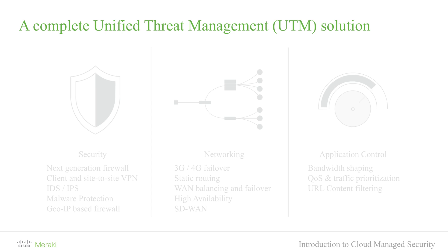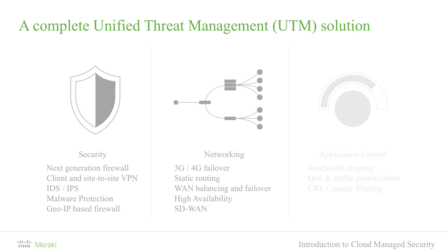Quick introduction about our security appliance. When we look into a unified threat management device, there are key things we normally look at. First, it's a UTM device, so we need it to secure our network — doing firewalling, intrusion detection and prevention, anti-malware, and even geo-IP based firewalling. But the gateway is also expected to do more than just security — enhanced routing as well. When we have multiple links, we need to load balance between them, do failover whenever a link fails, and of course traditional routing and high availability.